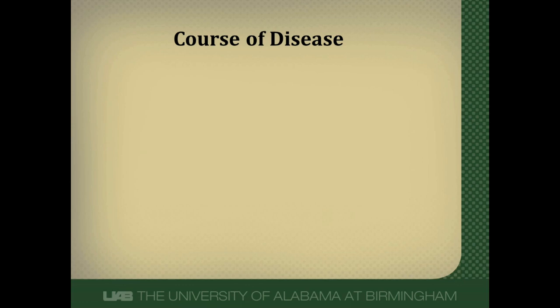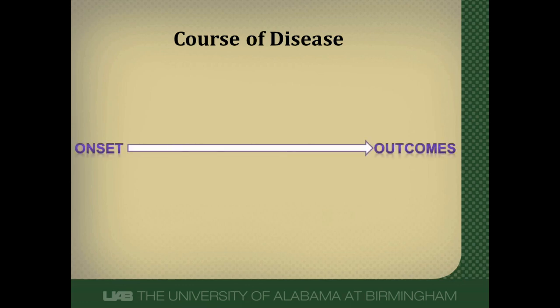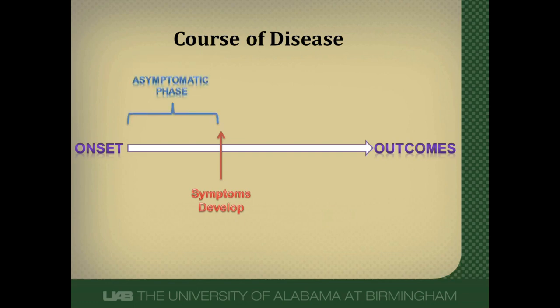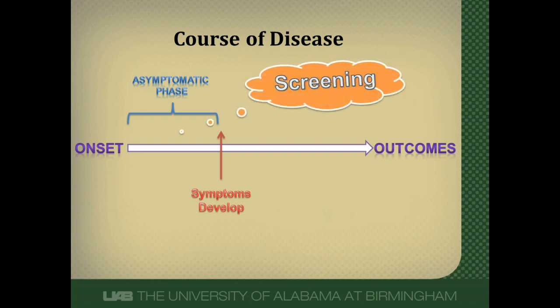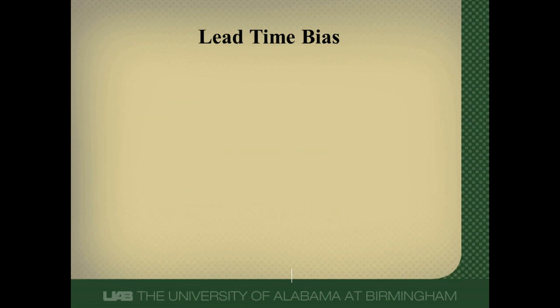So let's look at the course of a typical disease. There's the biologic onset of disease and it runs its course and then develops some outcomes. Now somewhere during this course symptoms will develop and a diagnosis will be made of the disease. But prior to this there's an asymptomatic phase where the patient has no idea they have the disease but it has developed. And this is where screening occurs. Screening is the detection of asymptomatic disease and the hope is that if you detect it earlier and there's effective therapy that you can improve the outcome of the disease.